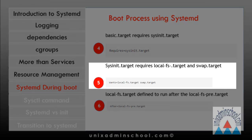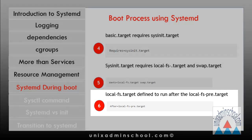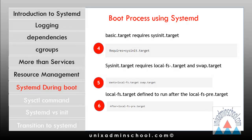The sysinit.target file starts the system initializing services such as mounting file systems and enabling swap devices. It wants local-fs.target and swap.target to load before sysinit.target. Looking at local-fs.target, it is set to run after the local file systems are available. This is how systemd takes control of the boot process and starts all the necessary services required to place the system in its default.target.